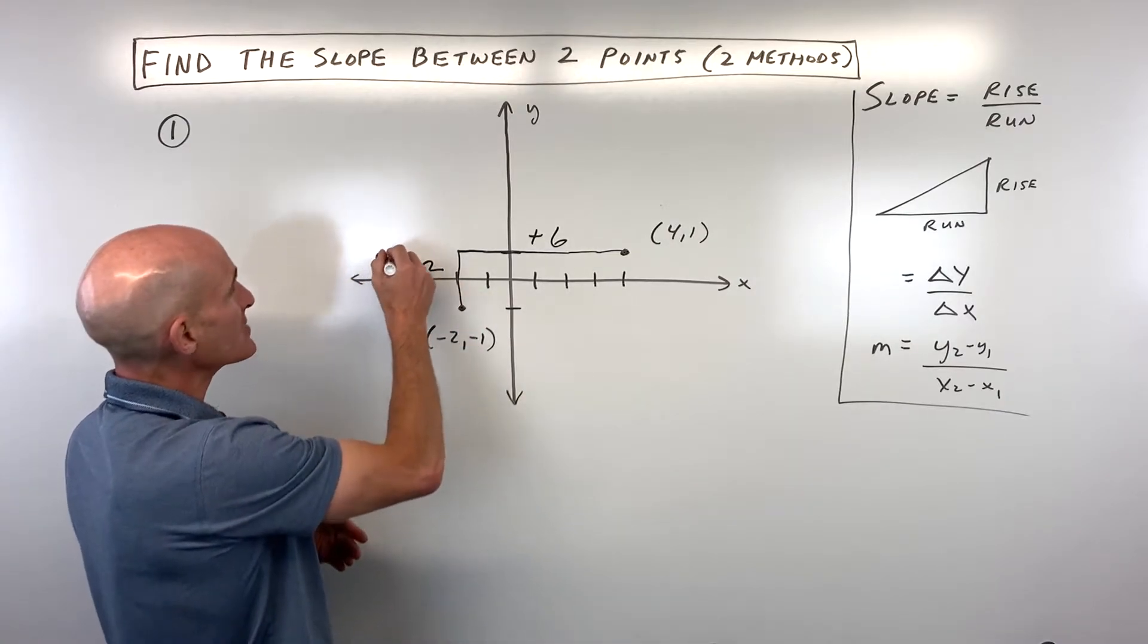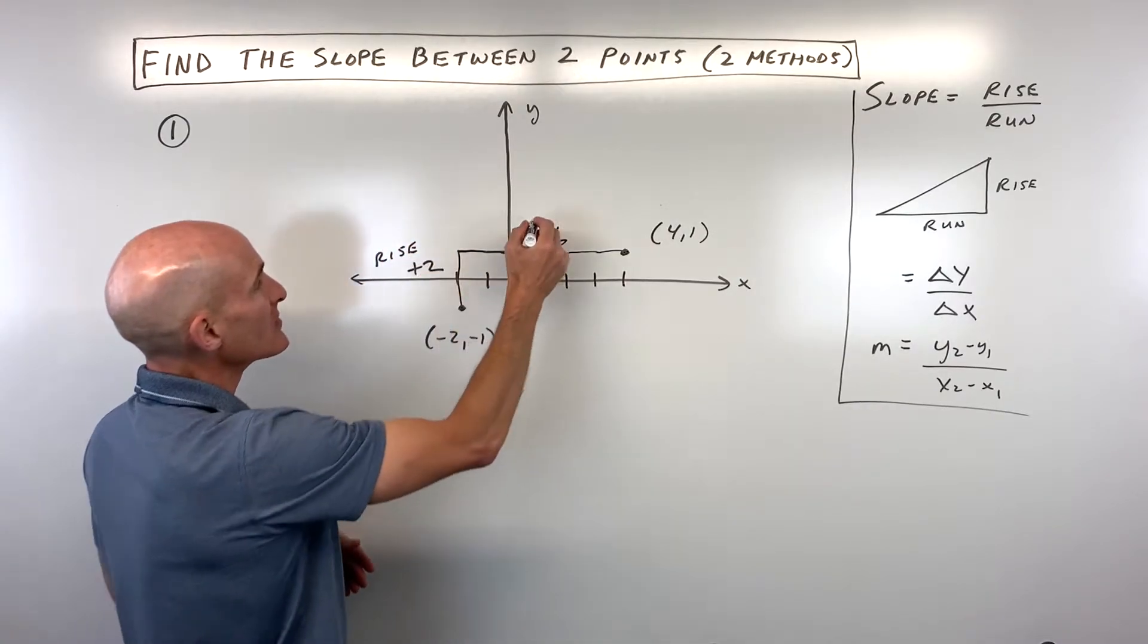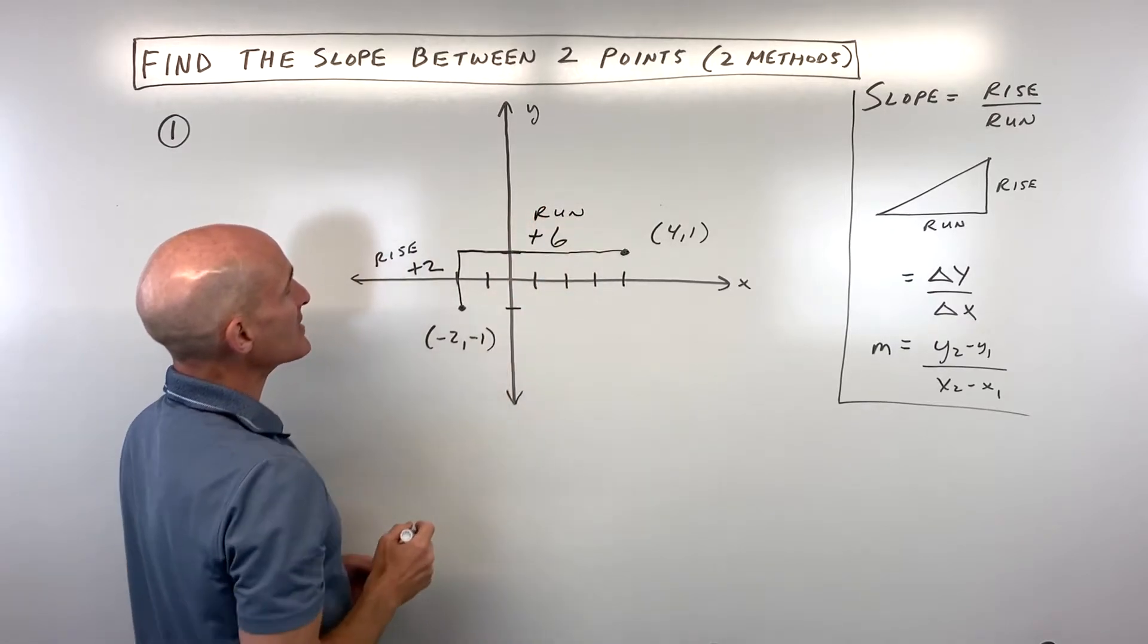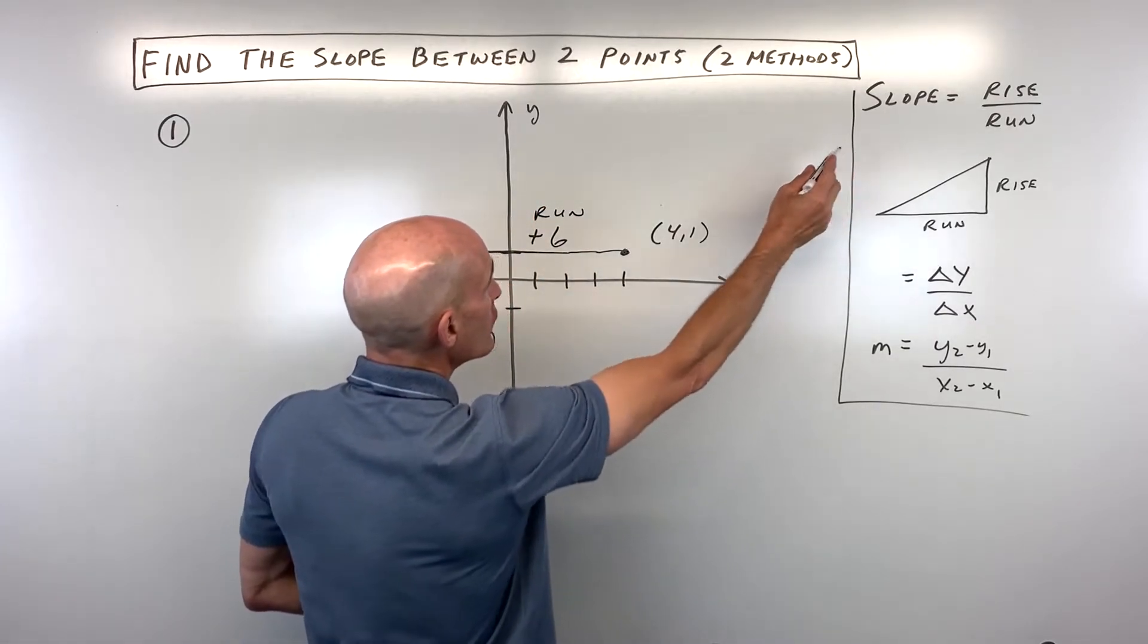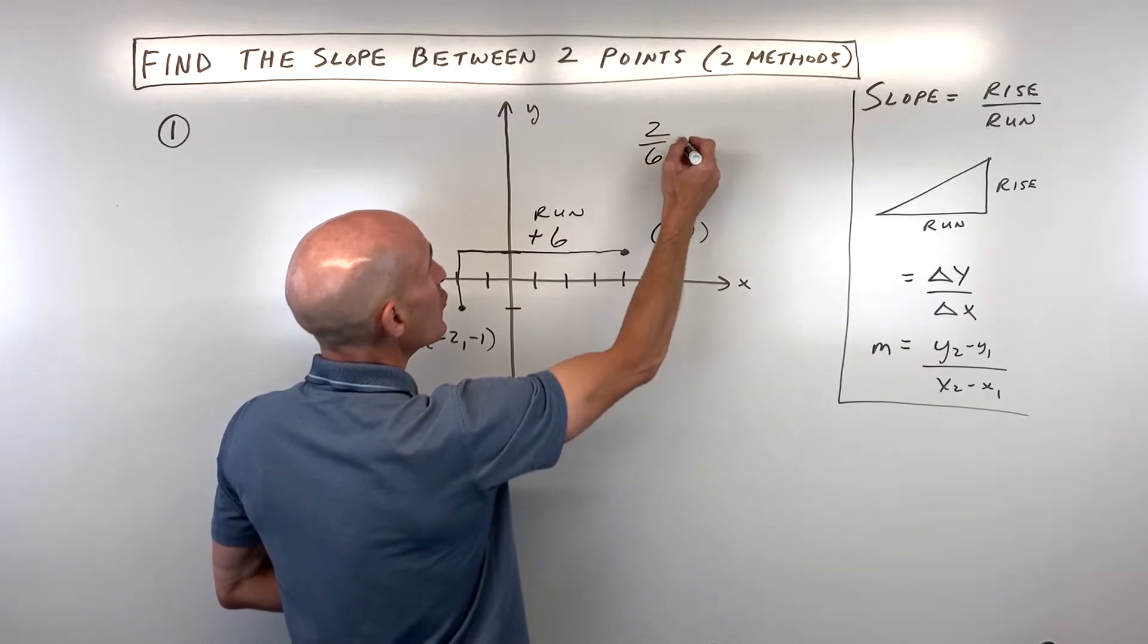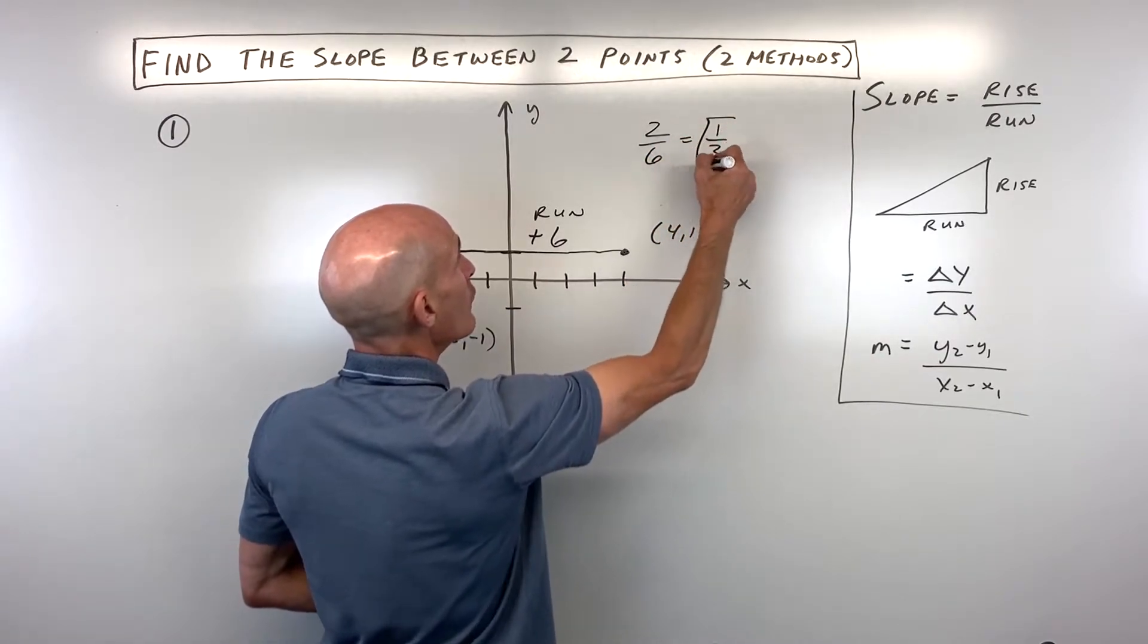So you can see this is our rise, positive 2, this is our run, positive 6. If we do this formula rise over run, that's going to be 2 over 6, which is a slope of one third.